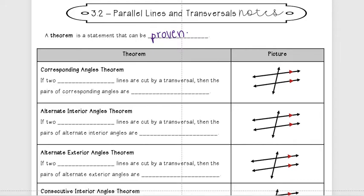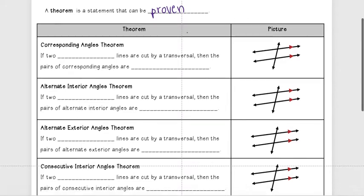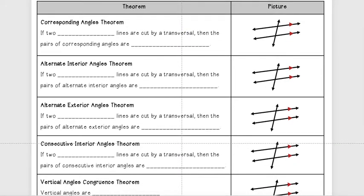This will come into play later in the year when we do some proofs. That's an important definition to know. For this first video we're just going to go over some theorems that we have. The first one is the Corresponding Angles Theorem, and that says if two parallel lines are cut by a transversal, then the pairs of corresponding angles are congruent. This is how most theorems will be set up — in an if-then statement.